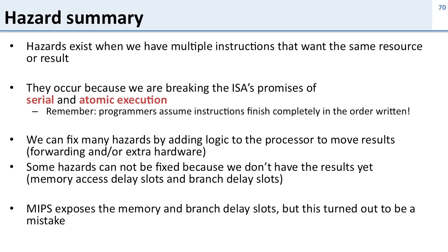Some hazards can't be fixed because we need a result that hasn't been calculated yet — that's why we have memory access delay slots and branch delay slots. MIPS made the decision to expose these delay slots, but this turned out to be a mistake. When they first did it, it gave a little performance gain and simplicity, but now every processor using MIPS has to account for them even though it has a different pipeline today.